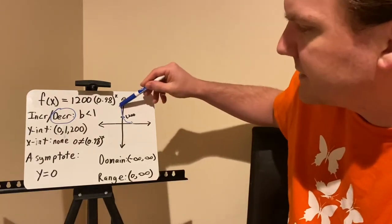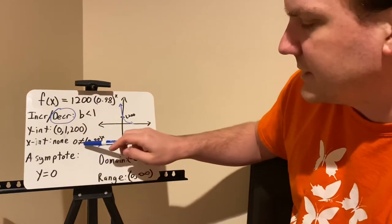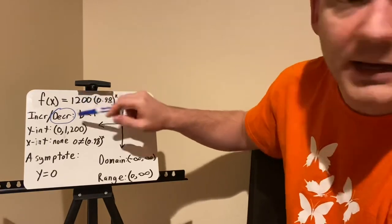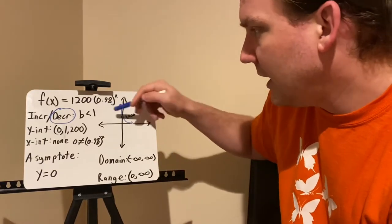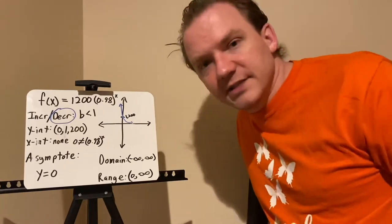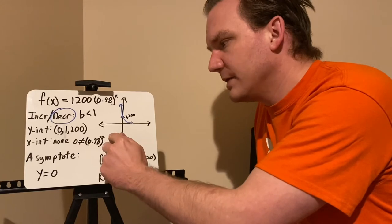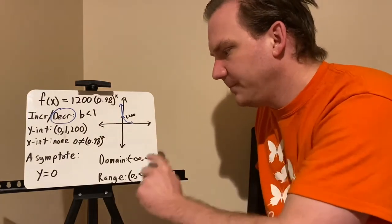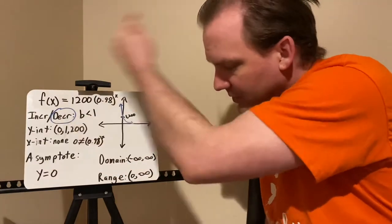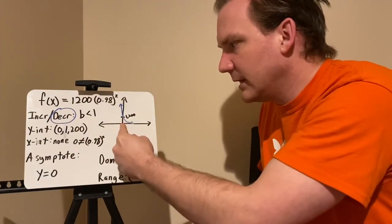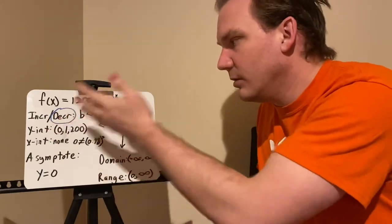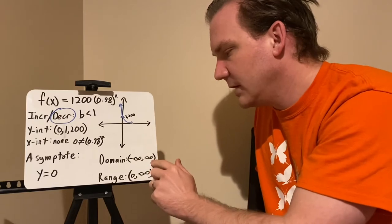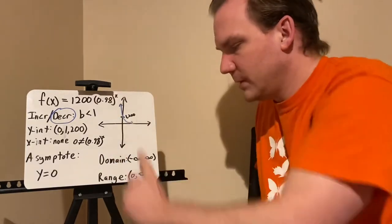The graph is decreasing. There's no x-intercept, because 1200 times 0.98ˣ = 0 would require 0.98ˣ = 0, and there's no exponent you can raise a number to and get zero. So the asymptote is again y = 0. The domain is all real numbers — negative infinity to positive infinity — even though negative time isn't realistic. The range goes from 0 up to positive infinity.